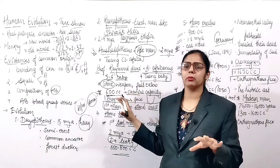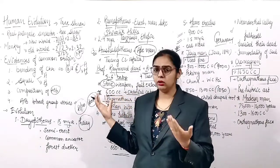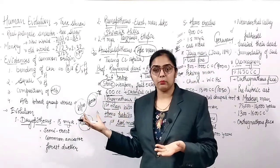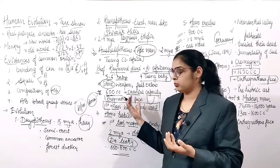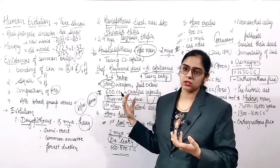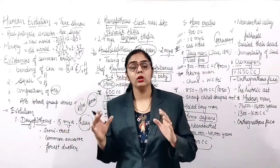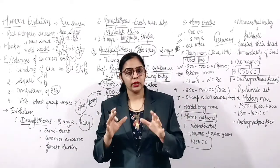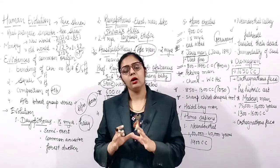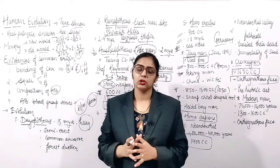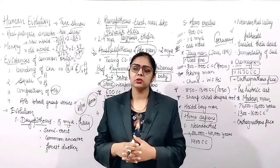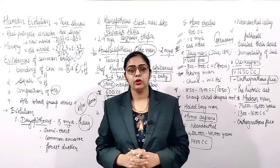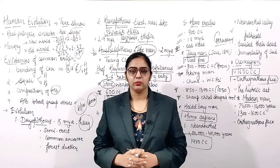So this was all about human evolution - old world monkey vs new world monkey, the evolutionary sequence, cranial capacities, and important characters - all discussed. With this, our chapter on Evolution is complete. The handwritten notes PDF link is in the description box. You can download, read, and memorize them. Watch the videos again if needed. If you like my video, please share and subscribe to my channel. Thank you.